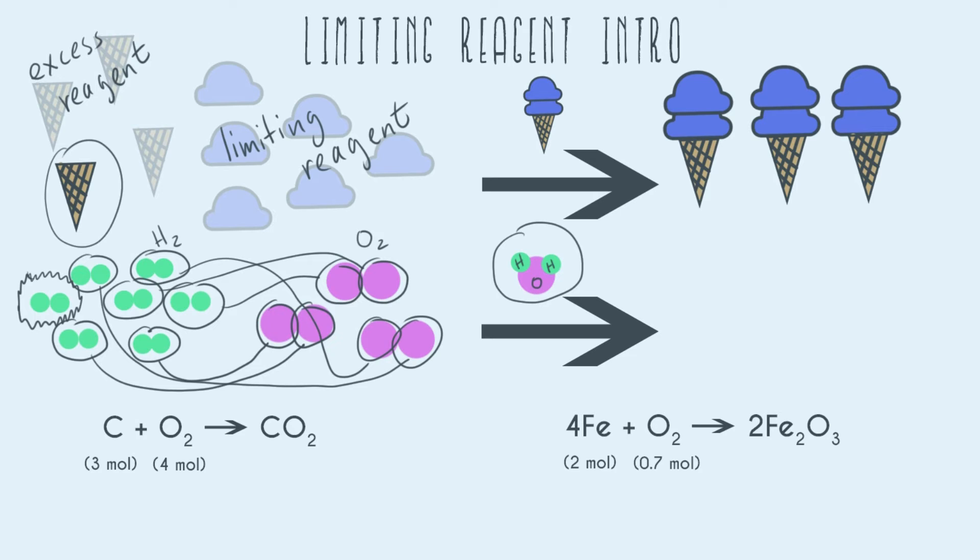So now just by drawing it out and knowing that I need two hydrogens for every one oxygen, I can see here that my H2 is left over. This has nothing to do. So this is the excess. And the one that got all used up, the one that is responsible for why we're not making more water is the O2. This is my limiting.